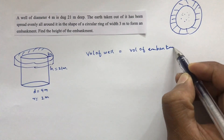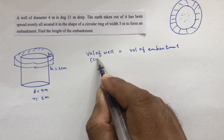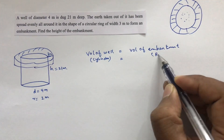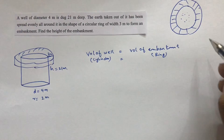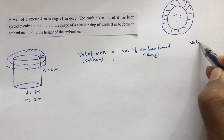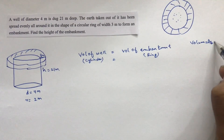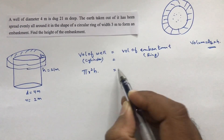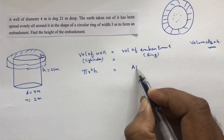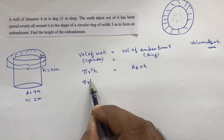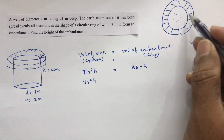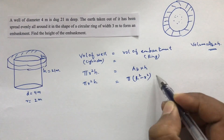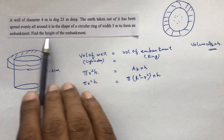The well is a cylinder and the embankment is in the shape of a ring. The general formula is: volume equals area of base into height. Volume of cylinder is π r² h, and area of a ring base is π(R² − r²), so volume of embankment is π(R² − r²) into height of embankment.